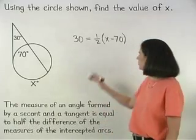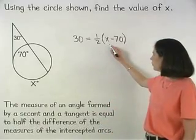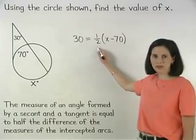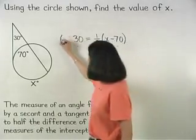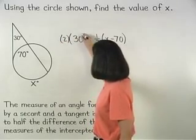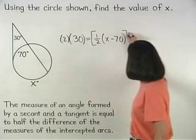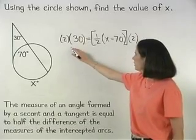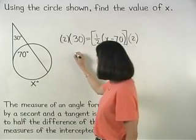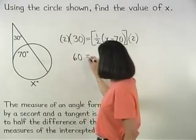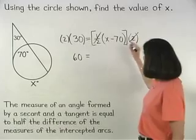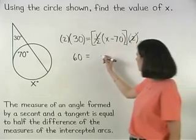Now solving for x in our equation, our first step is to get rid of the one-half by multiplying both sides of the equation by 2. On the left side, 2 times 30 is 60. And on the right side, the one-half and 2 cancel out, and we're left with x minus 70.